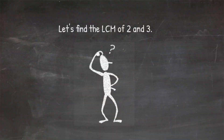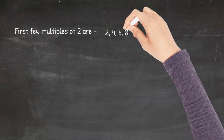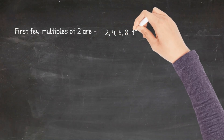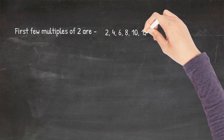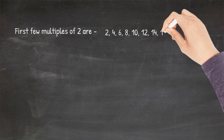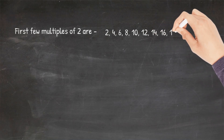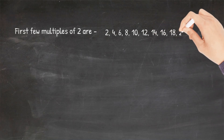For example, if we take two numbers 2 and 3, let's see what the multiples are. The first few multiples of 2 are: 2, 4, 6, 8, 10, 12, 14, 16, 18, 20, and so on.